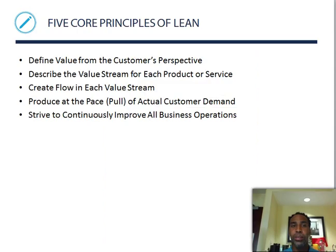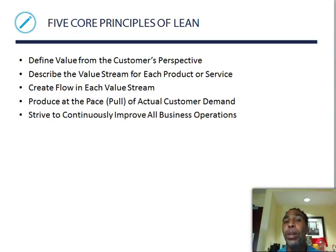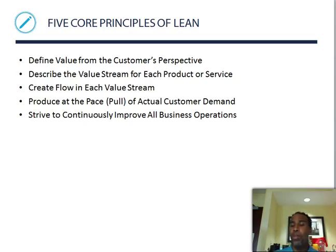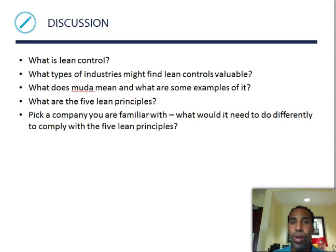The five core principles of lean: define value from the customer's perspective — it doesn't matter what you think is valuable, it matters what the customer thinks; describe the value stream for each product or service; create flow in each value stream; produce at a pace pulled by actual customer demand — if customers need 90 benches a week, don't produce 3,000; and strive to continuously improve all business operations.